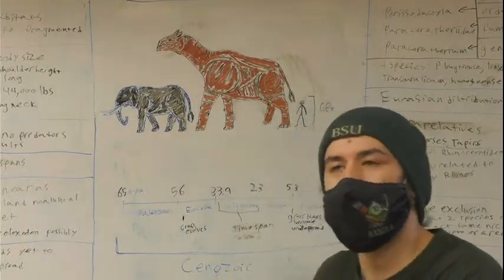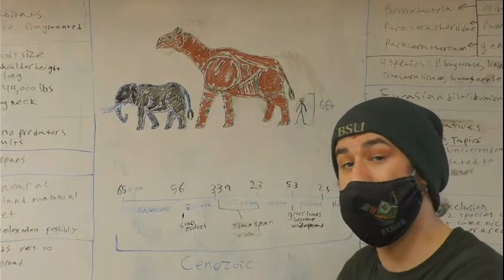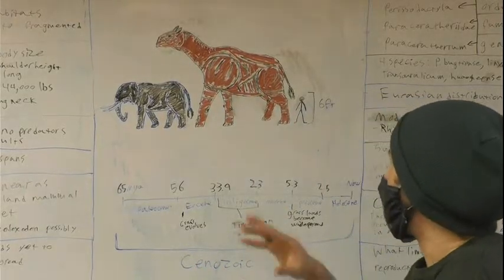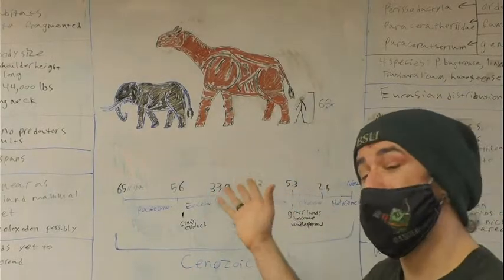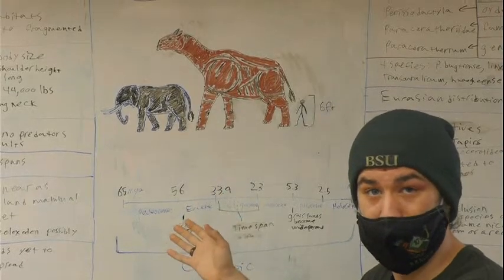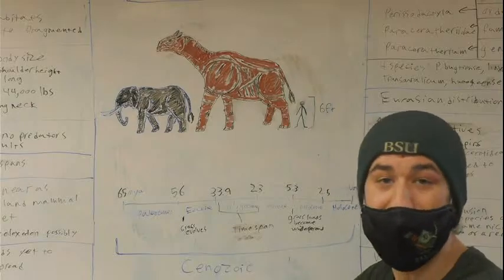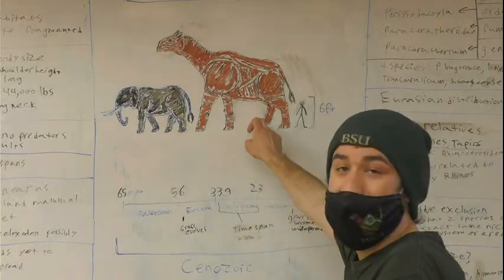Paraceratherium is one of two mammals that is debated which one is the largest land mammal ever to live. Just taking a second to look at that size difference. The African elephant is currently the largest living land animal. Period. If you're on earth today that is the biggest animal currently. Not the case in the past.